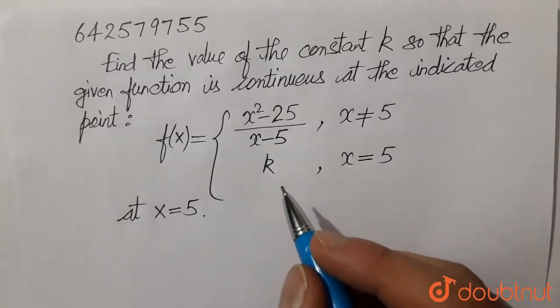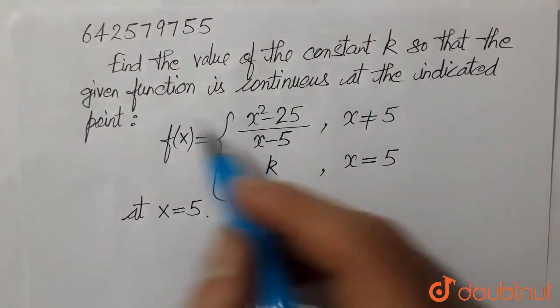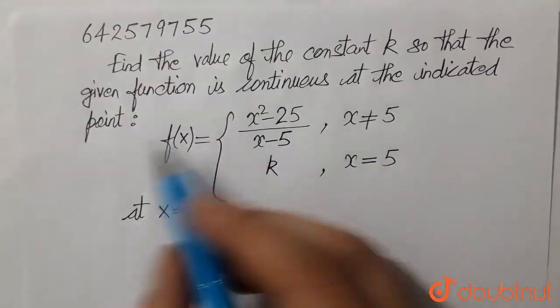Students, we have this question. Find the value of the constant k so that the given function is continuous at the indicated point.